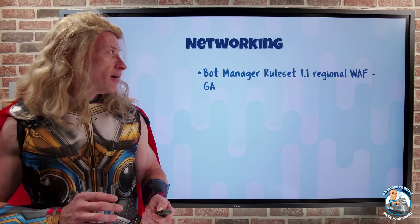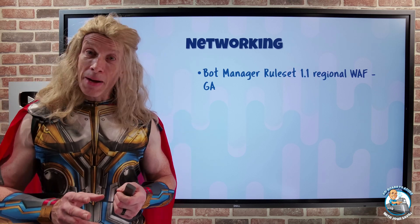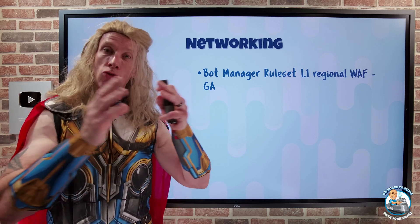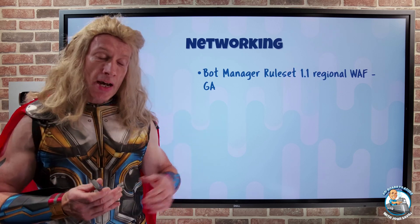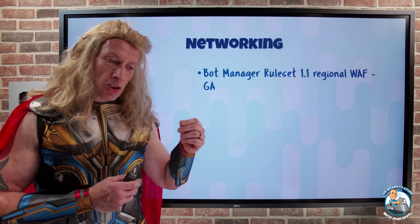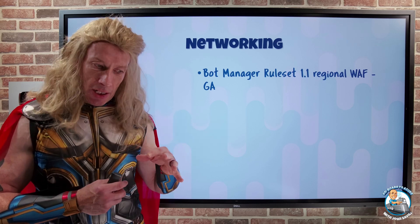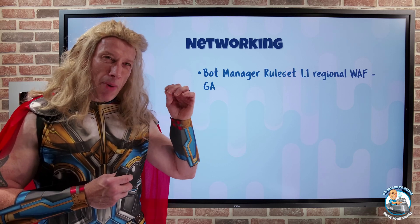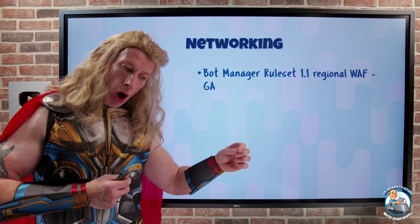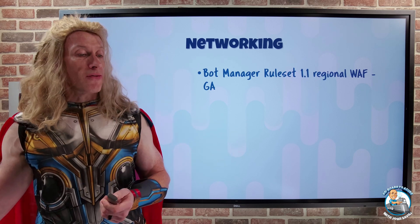On the networking side, the Bot Manager rule set 1.1 is now available for the regional web application firewalls. Regional works with App Gateway because that's a regional layer 7 service. It has some new good bot rule sets and some new bad bot rule sets. For example, on the bad side, risky IPs now come from Microsoft Threat Intelligence. By default, traffic from good bots is allowed, traffic from bad bots is blocked, and unknown ones get a log action — but you can override those if you want.